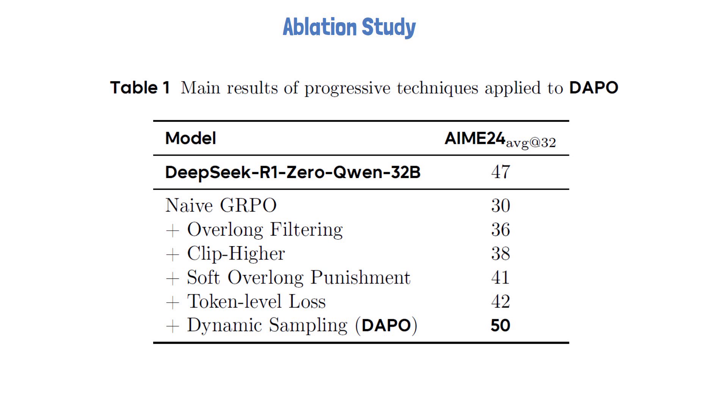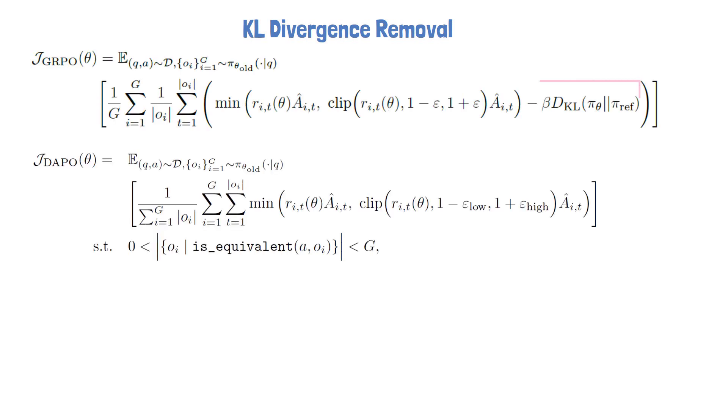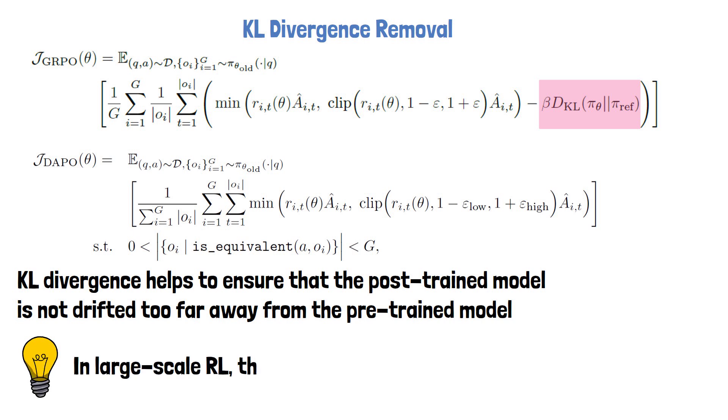Another last change which we did not cover so far, and is not listed here, is the removal of the KL divergence from the objective. We see in the objective that GRPO has a KL divergence component, which does not exist in the DAPO objective. This component helps to ensure that the model is not drifted too far away from the pre-trained model. However, the paper says that during reinforcement learning for long chain of thought reasoning, the model distribution can diverge significantly from the initial model, and therefore, this restriction is not needed.